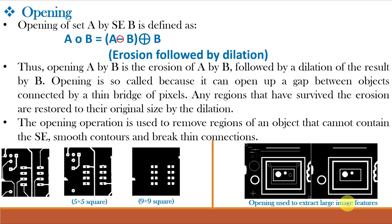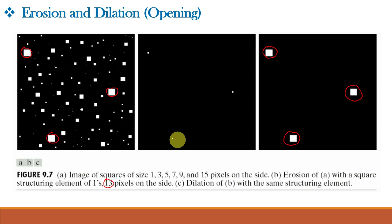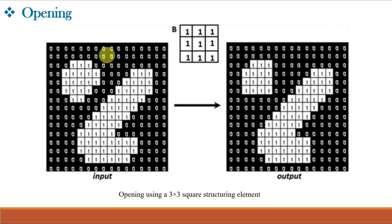We also saw in the previous video class that larger squares are extracted while smaller squares are removed. During erosion, all smaller squares are eroded out; the larger squares are then restored to their original size by dilation. So it is a combination of erosion followed by dilation, which is called opening. Now, given an image and a structuring element, opening proceeds as erosion then dilation.